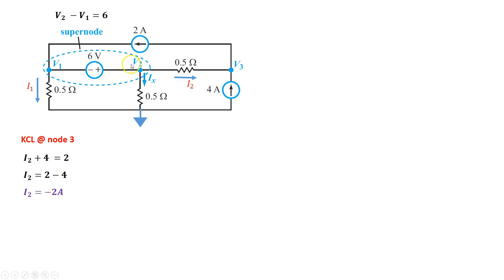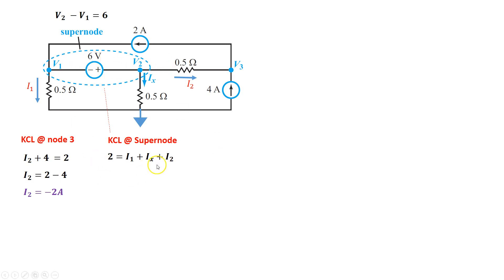Next, we're going to apply KCL at the super node. A super node is a giant node, and Kirchhoff's current law holds true at a super node just like it does at a regular node. The total current coming into this super node is 2A on the V1 side. I1 is coming out of the V1 part, and Ix and I2 are coming out of the V2 part. So using KCL: 2 equals I1 plus Ix plus I2.